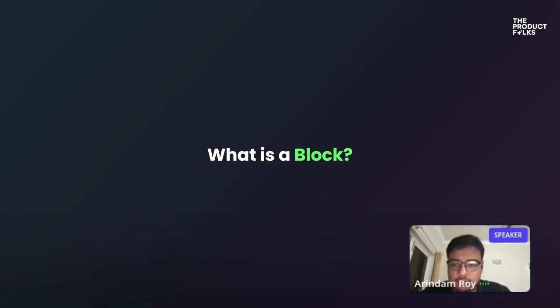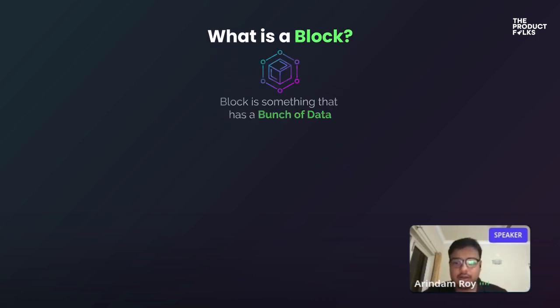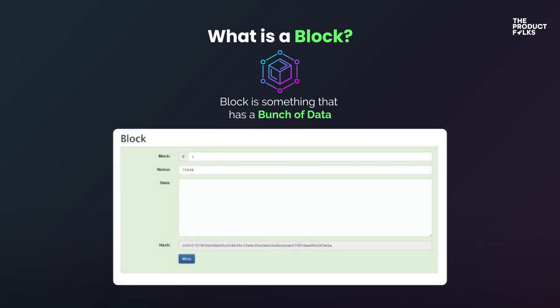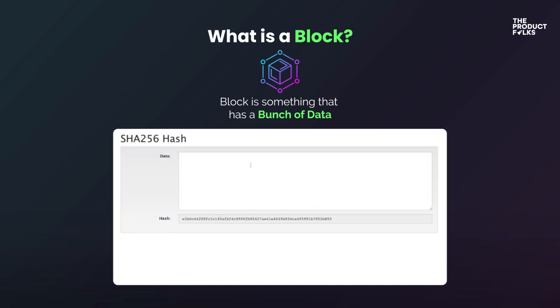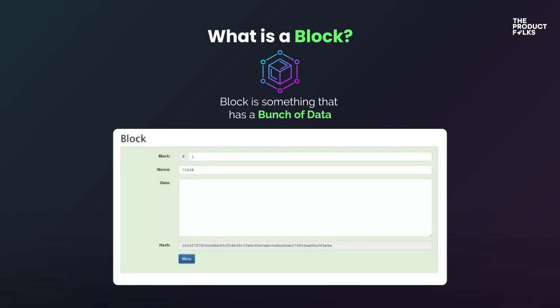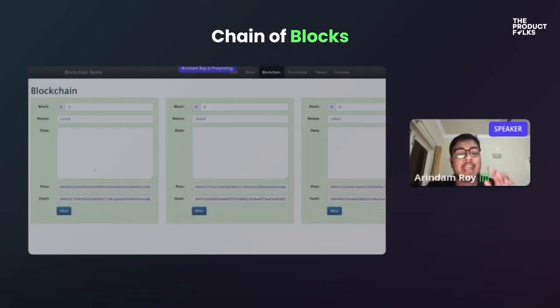A block is a bunch of data — data could be anything. There are three fields: block number, nonce, and data. A block is valid when I do a SHA-256 hash and the resulting hash starts with the first four zeros. That's an arbitrary rule I'm setting for this demo blockchain. So a block consists of the block number, the nonce, some data, and a hash, and it's valid if the hash starts with four zeros.